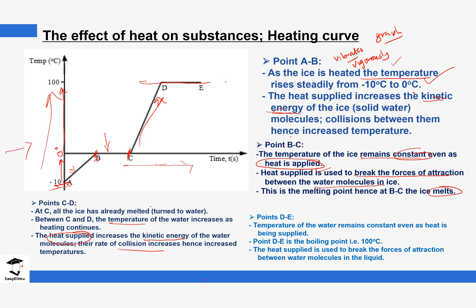Finally, in region D-E, the temperature is constant again. The heat that was supplied initially is used to break the forces of attraction between the water molecules. When those forces of attraction are broken, the water molecules begin to separate and turn into gas. At point D the forces begin to break, and by the time we get to point E all the water molecules have turned into gas. That is what happens in this heating curve.